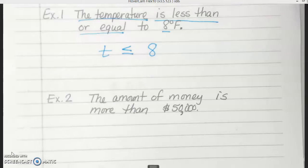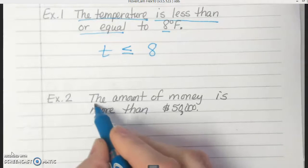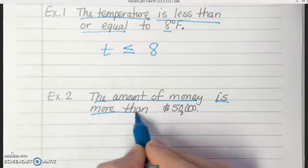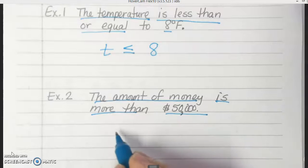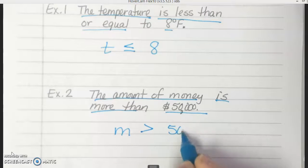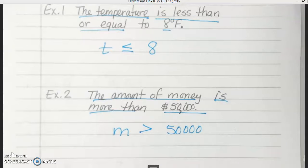Example two, the amount of money is more than $50,000. So we've got the amount of money. It's more than $50,000. So money is more than $50,000. And notice when we do in both equations and in inequalities, if we're dealing with something like money, we drop the dollar sign. We leave that off. Any questions on that one?